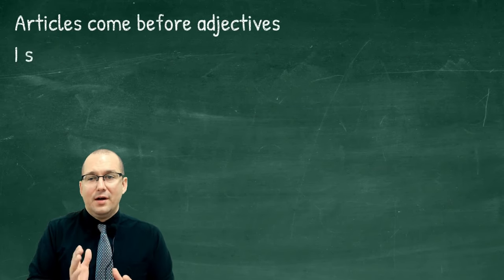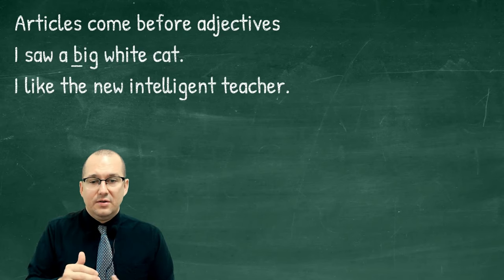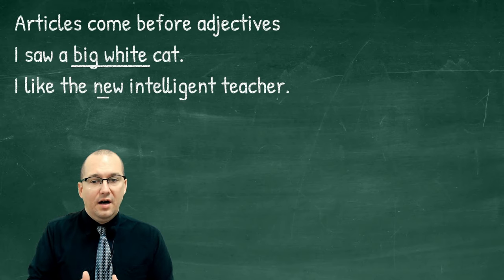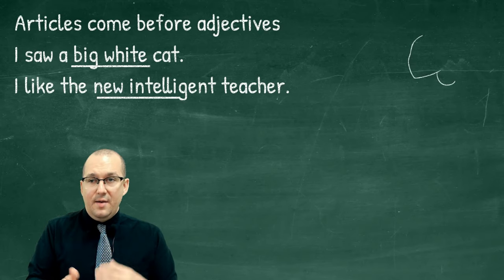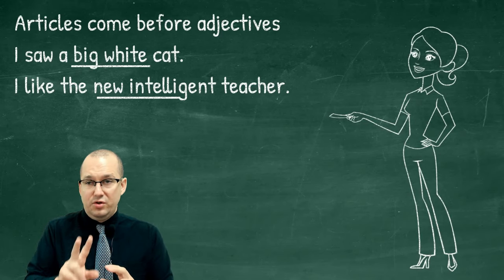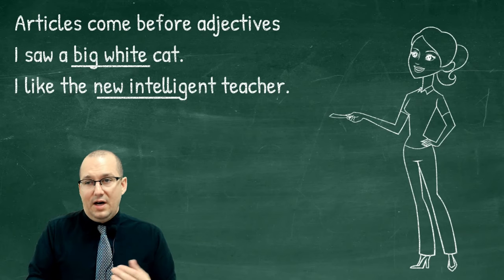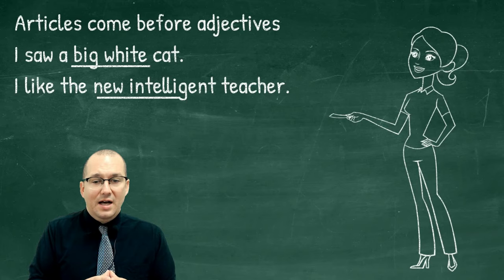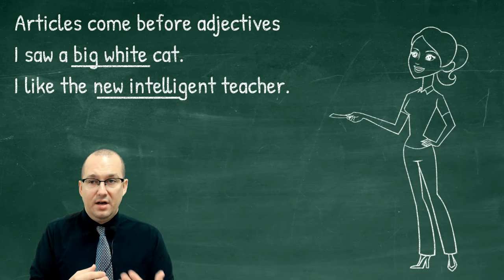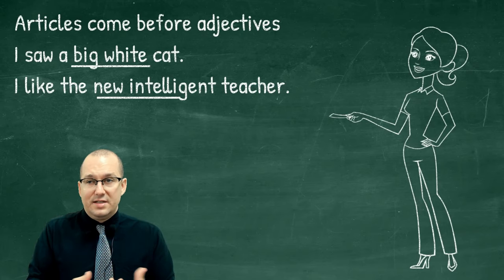You must also remember that articles come before adjectives and adjective nouns. For example, 'I saw a big white cat.' Many times people just study 'I saw a cat,' but if there are two, three, or four adjectives before the noun, the article 'a' comes before all of them. So: 'I saw a big white cat.' Another example: 'I like the new intelligent teacher.' Whether it's 'a' or 'the,' the article comes first, then the adjectives, then the noun.